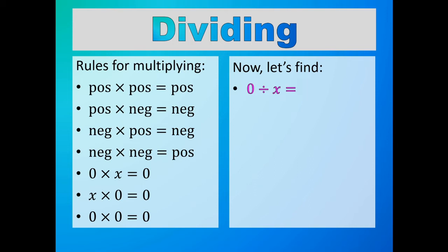Now let's find, from these rules of multiplying and from the fact that division is the opposite of multiplication, what zero divided by x is. Here's the product of zero and here's x, one of the numbers being multiplied — the other number being multiplied is zero. So zero divided by x is equal to zero. We could also use the other equation: here's the product of zero, here's one of the numbers being multiplied as x, and here's the leftover number being multiplied of zero. So in either case, zero divided by x is equal to zero.